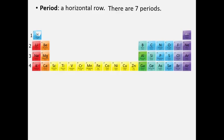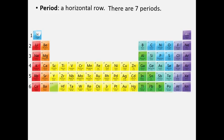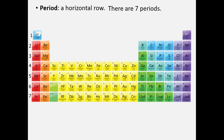In period number 4, the total number of elements is 18, meaning 8 above and 10 from the inner transition metals. In period number 5, the total number of elements is 18. In period numbers 6 and 7, the total number of elements is 32.